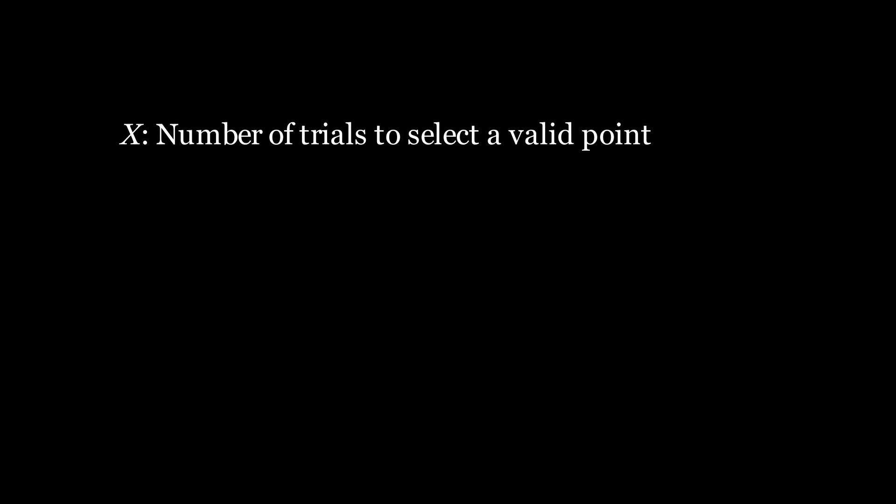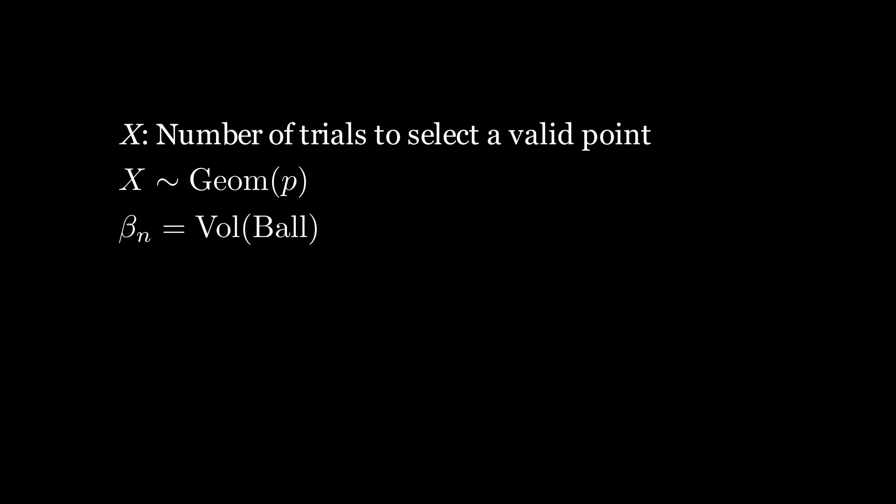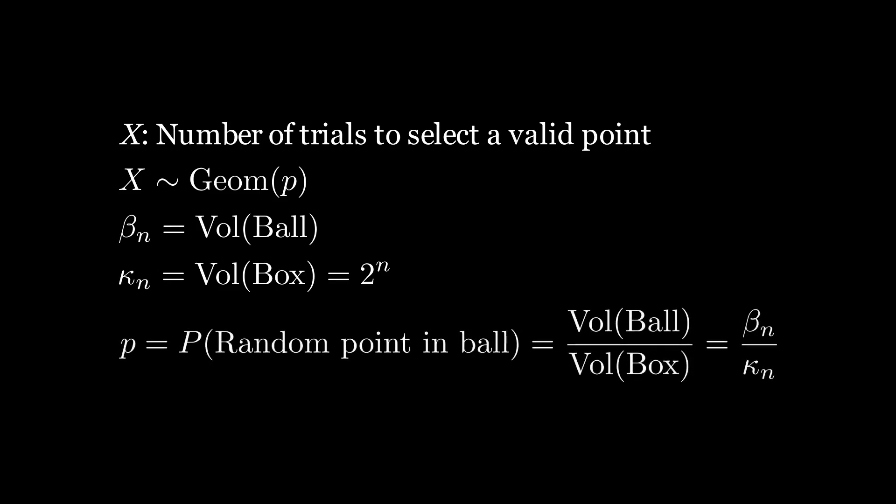How did that happen? Let x be the number of trials needed to select a valid point in the ball. Since each trial is independent and we repeat until we succeed, x is a geometric random variable. Let beta-n be the n-dimensional volume of the n-dimensional unit ball, and kappa-n be the volume of the n-dimensional box we sample from, where kappa stands for cube. Since each component is randomly selected between negative 1 and 1, the box has side length 2, so its n-dimensional volume is 2 to the n. The probability that a selected point is in the ball equals the ratio between the volume of the ball and the volume of the box, so we need to find beta-n.